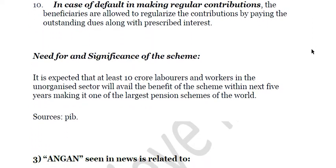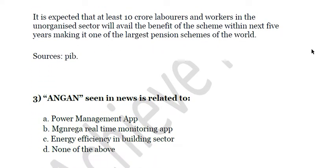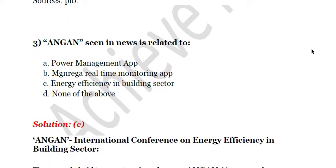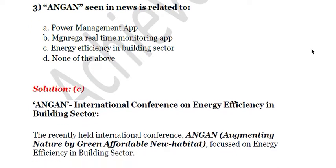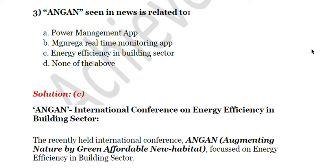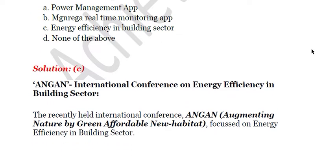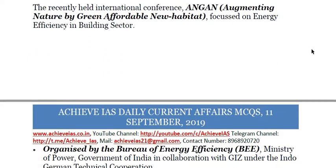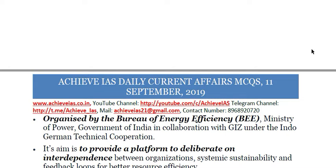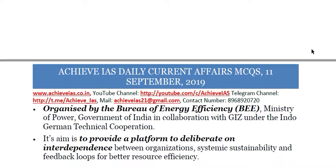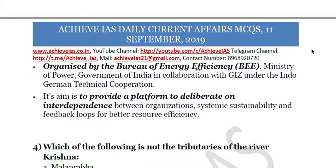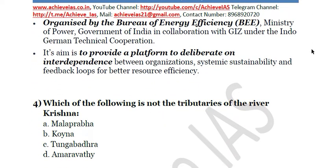The next question: what is ANGAN seen in the news? Options are: A — power management app, B — MGNREGA real-time monitoring app, C — energy efficiency in building sector, D — none of the above. The answer is C, energy efficiency in building sector. ANGAN stands for Augmenting Nature by Green Affordable New Habitat. It is an international conference on energy efficiency in the building sector, organized by the Bureau of Energy Efficiency, Ministry of Power, Government of India, in collaboration with GIZ under Indo-German technical cooperation, aiming to integrate energy efficiency in the building sector.